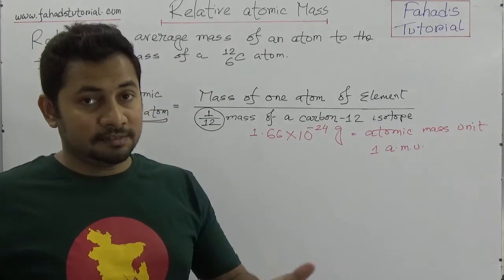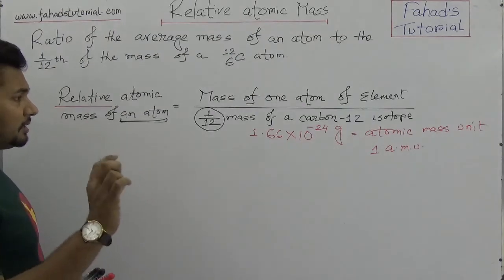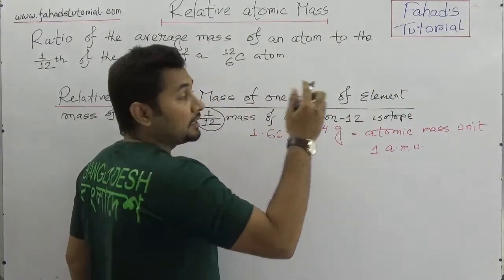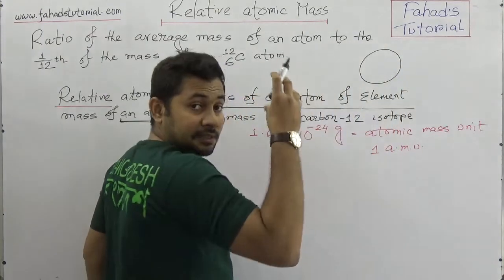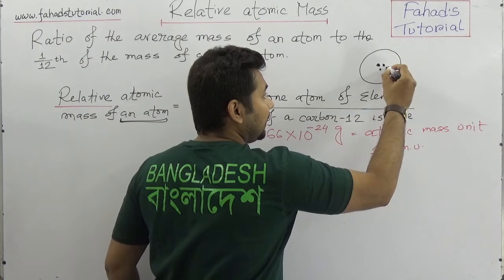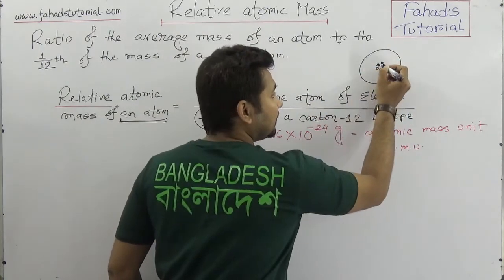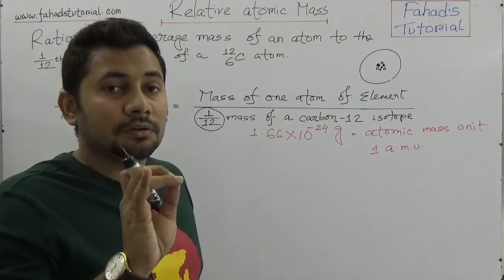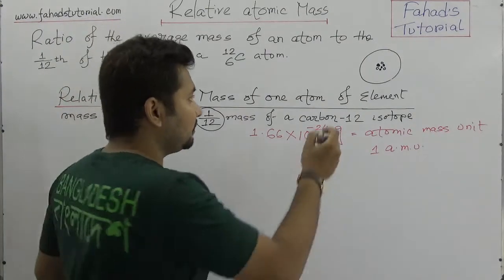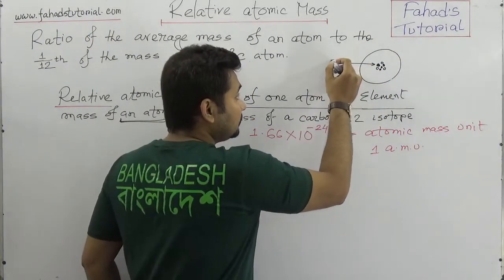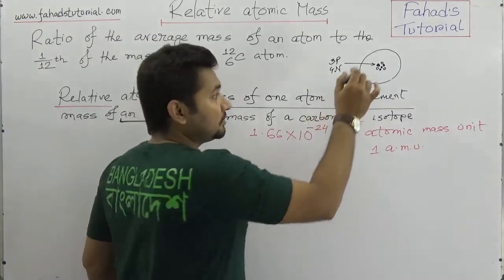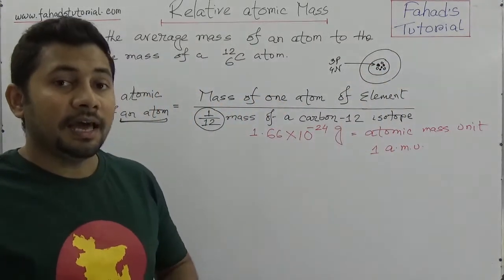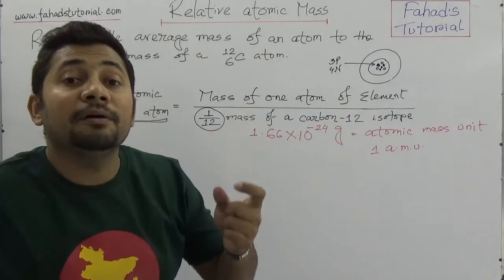So how do we calculate relative atomic mass? First, we need to understand one thing: in an atom, the nucleus contains neutrons and protons. Suppose there are four neutrons and three protons — the element is lithium, because in a lithium atom there are three protons and four neutrons. So if we need to understand what is the relative atomic mass of lithium, how can we calculate it?